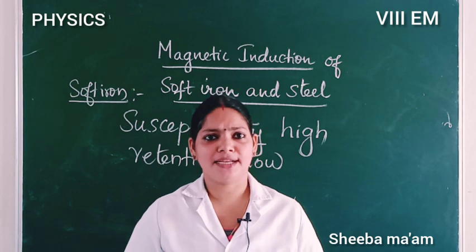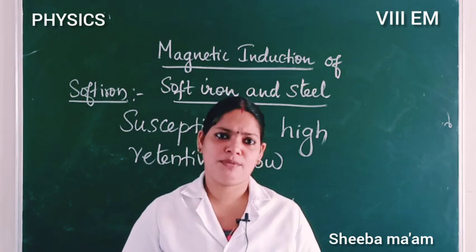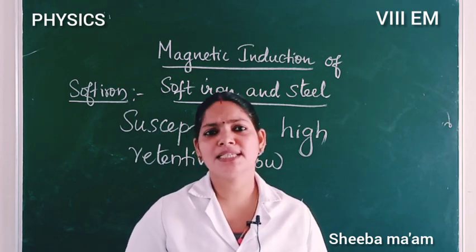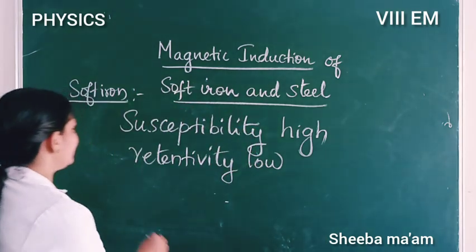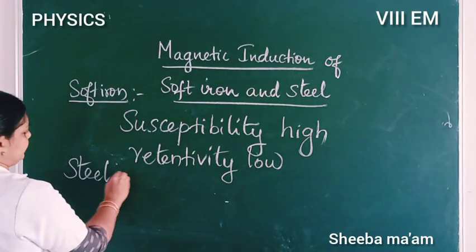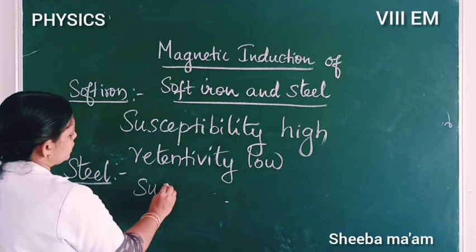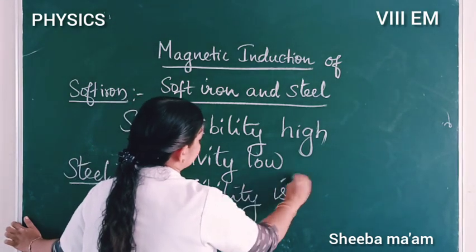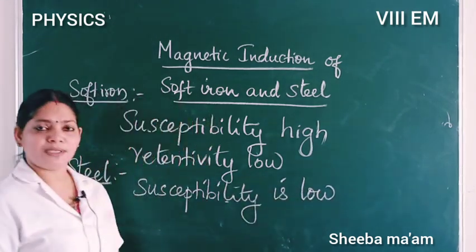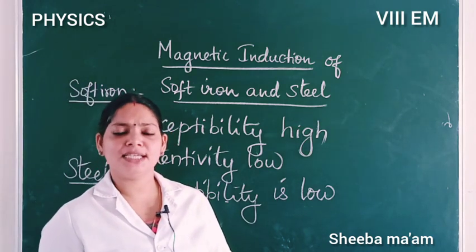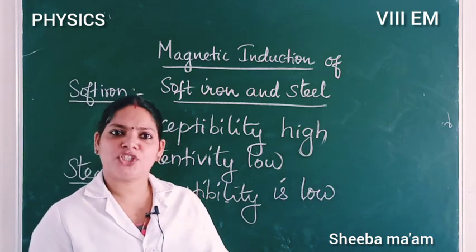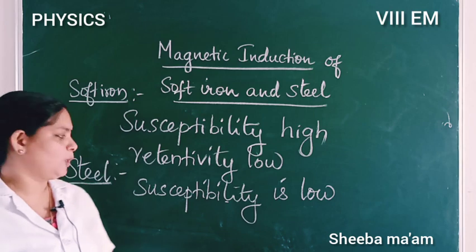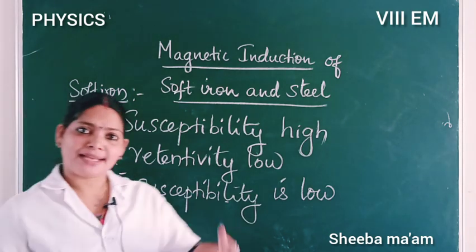For steel, magnetic induction is very low. It is not easily subjected to magnetic induction — its susceptibility is very low. Steel has low susceptibility and low magnetic induction.